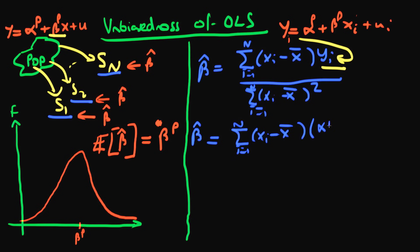So substituting in for yi I get alpha p plus beta p xi plus ui. And then on the bottom I've still got this sum of xi minus x bar all squared which I'm going to call sxx.